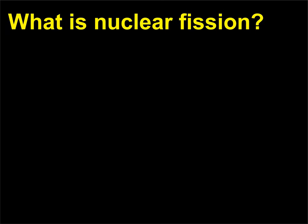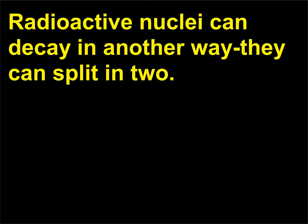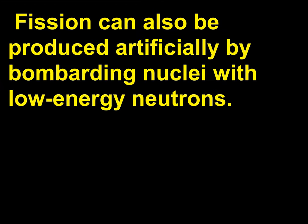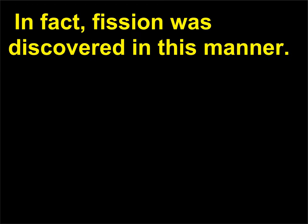What is nuclear fission? Radioactive nuclei can decay in another way — they can split in two. This process is called spontaneous fission. Fission can also be produced artificially by bombarding nuclei with low-energy neutrons. In fact, fission was discovered in this manner.